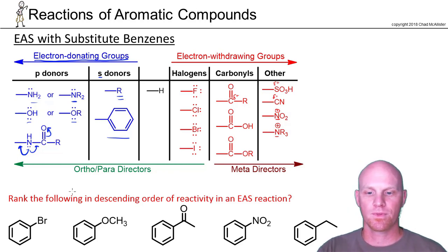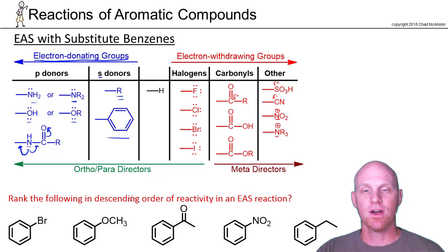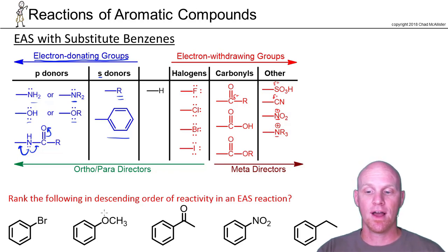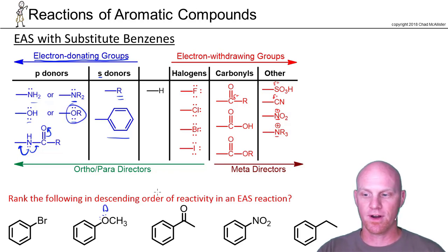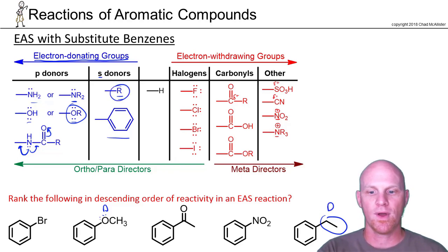The question at the bottom of the page says to rank the following in descending order of reactivity in an EAS reaction. The first thing to do is just recognize whether they're donating or withdrawing. Oxygen with lone pairs — that's a donating OR group. A plain old alkyl group, that's just an R group, also a donating group. But the rest — bromine is a withdrawing group, a carbonyl carbon in a ketone is a withdrawing group, and then the NO2 group where nitrogen has a positive formal charge is also a withdrawing group.